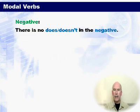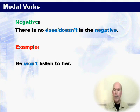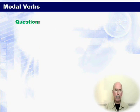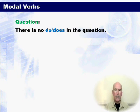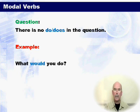The negative form: there is no 'does' or 'doesn't' in the negative. For example, 'he won't listen to her', 'they can't be serious'. The question form: there is no 'do' or 'does' in the question. Let's have a look at an example — 'What would you do?'